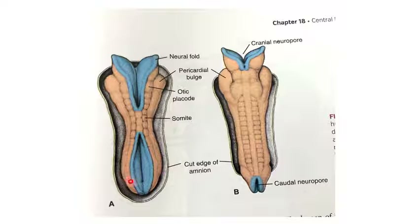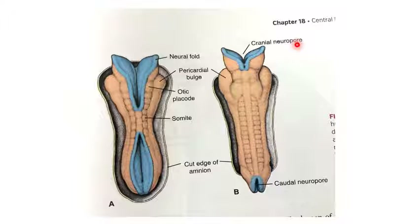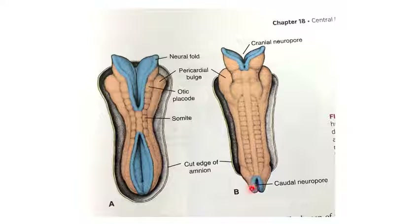The dorsal view of the human embryo at the 22nd and 23rd day stage shows the neural groove beginning to fuse at the cervical region, then proceeding cranially and caudally. The anterior or cranial neuropore closes at the 20th somite stage, at the beginning of the fourth week. The posterior or caudal neuropore fuses at the 25th somite stage, at the end of the fourth week.